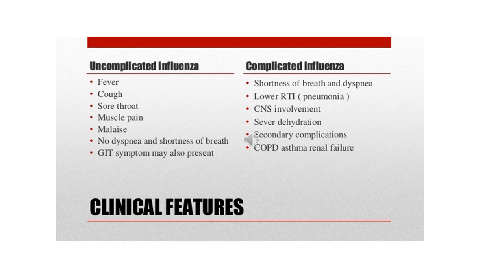In uncomplicated influenza, the patient presents with general fever, cough, sore throat, muscular pain, and malaise, with no dyspnea or shortness of breath, and respiratory symptoms are not severe. GIT symptoms may also be present. In complicated influenza, the patient will feel shortness of breath and dyspnea, with lower respiratory tract involvement.